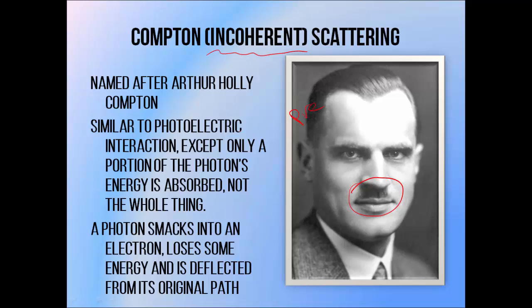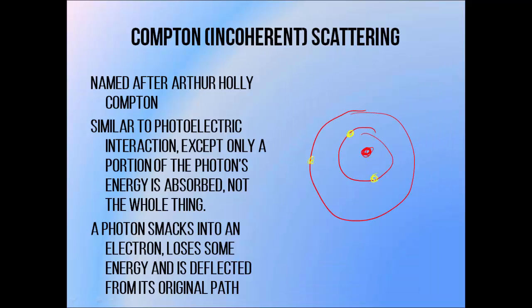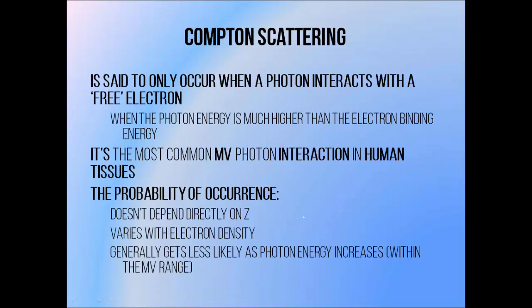Compton, or incoherent scattering — implying that there's energy lost in the process — is named after Arthur Holly Compton. It's somewhat similar to the photoelectric effect in that a photon comes in and strikes an electron, but this time the photon is not completely absorbed; it only transfers a portion of its energy to the electron. The photon bounces off in a different direction with a slightly lower energy, and the difference is donated to the electron as kinetic energy, causing it to go shooting off as a secondary electron. Physics textbooks will often say this interaction occurs only between a photon and a free electron, but it just means the photon's energy is much higher than the binding energy of the electron, so the binding energy is considered negligible. This interaction is the most common type in radiotherapy photon beams when passing through a normal human body.